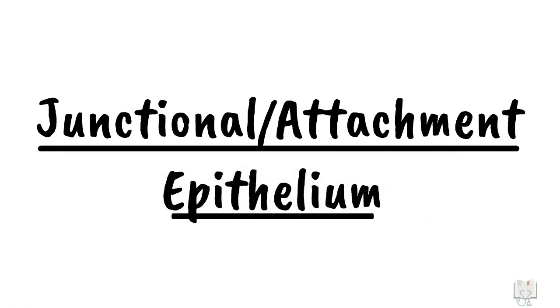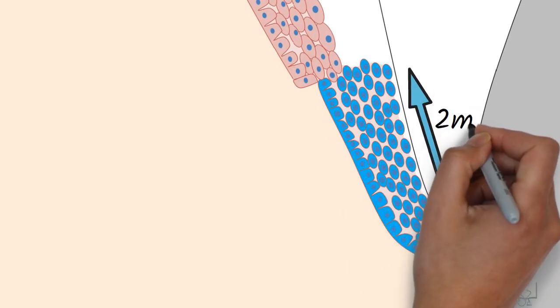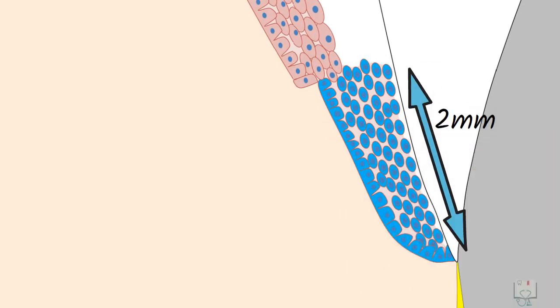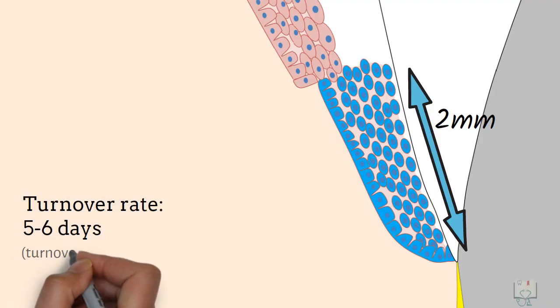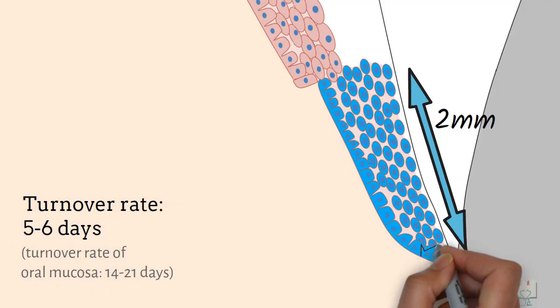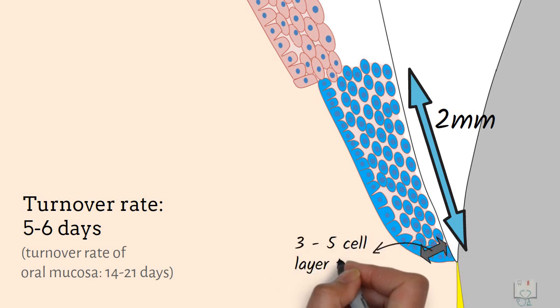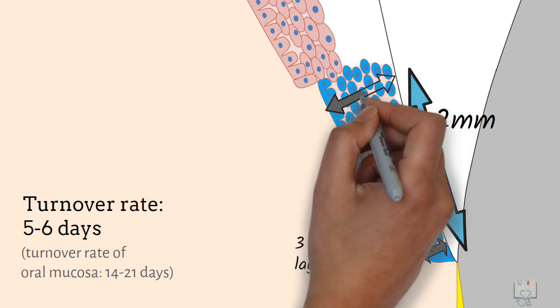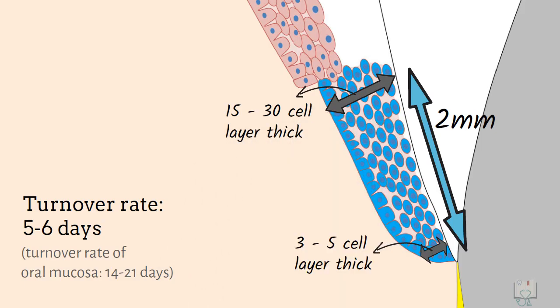Junctional epithelium: The epithelium of the gingiva which gets attached to the tooth is called junctional epithelium or attachment epithelium. It extends up to 2 mm on the tooth surface and has the highest turnover rate of 5 to 6 days. At the apical end, it is 3 to 5 cell layers thick, whereas at the coronal end, it is 15 to 30 cell layers thick.